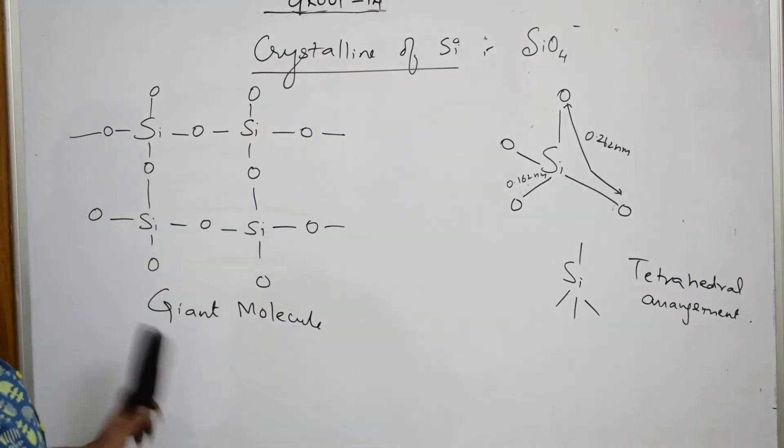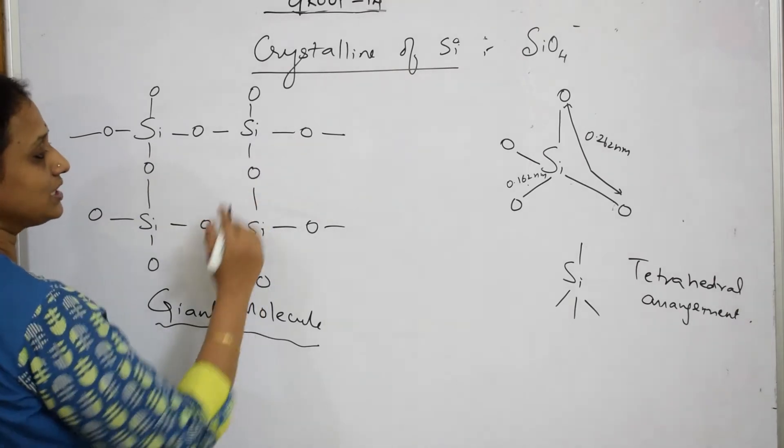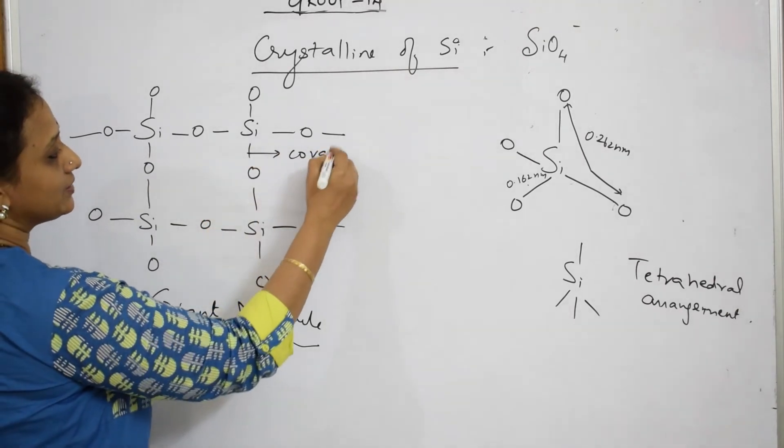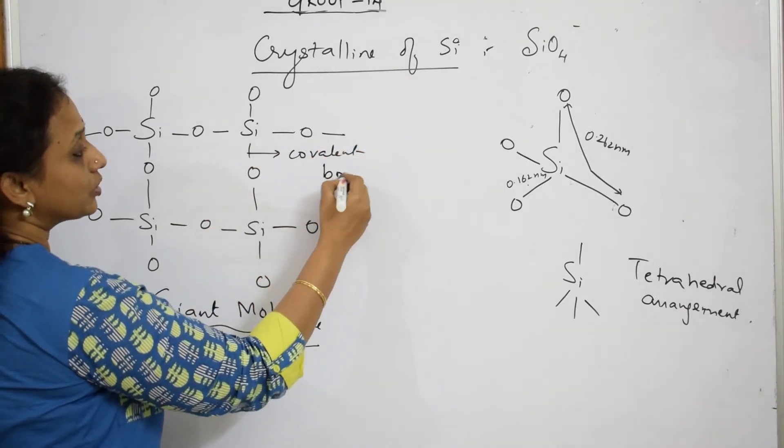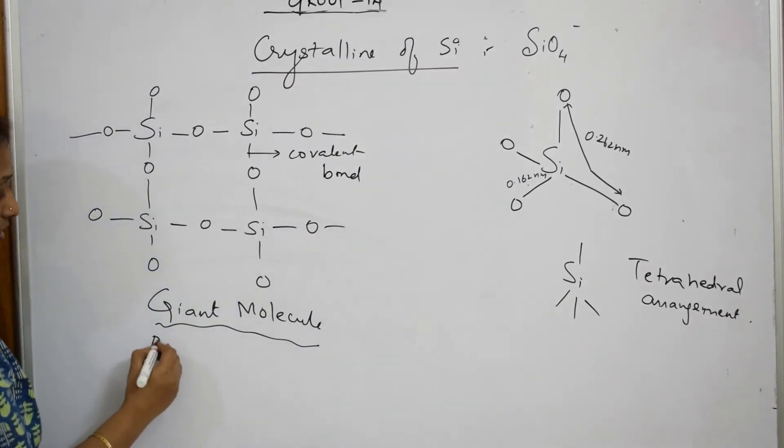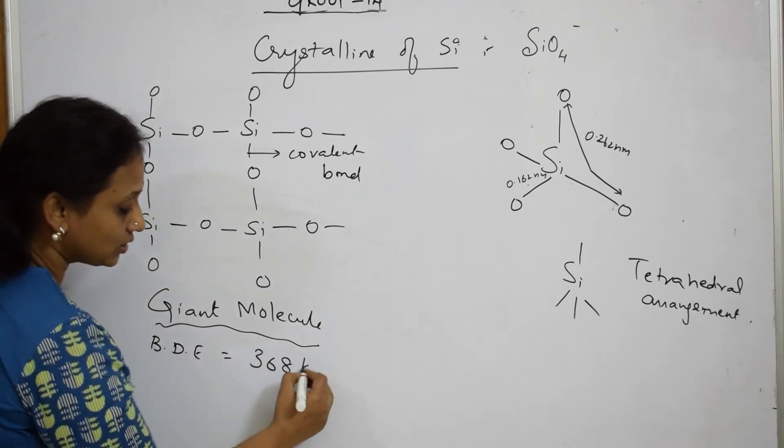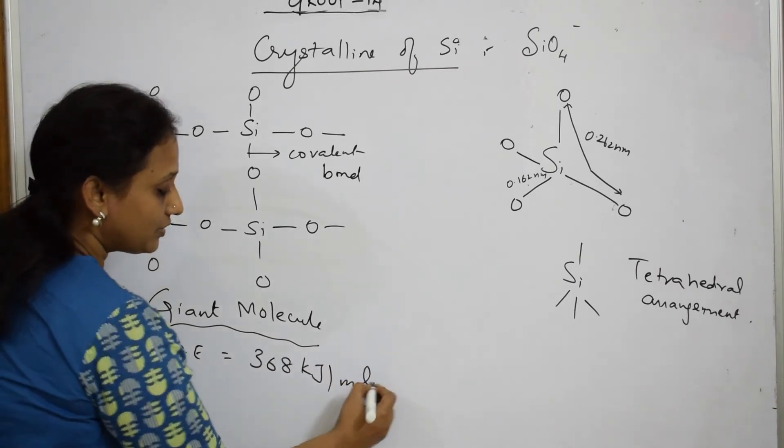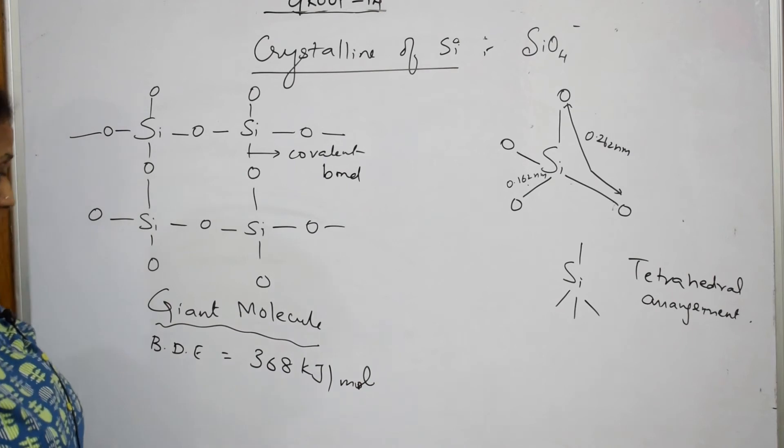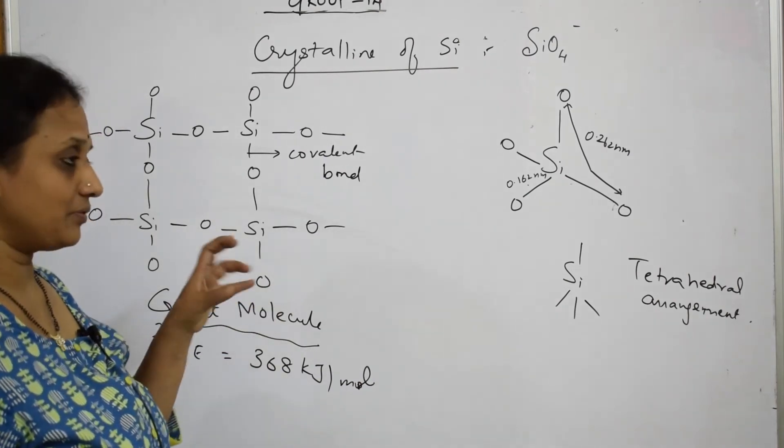Now this giant molecule, when I observe, all these bonds are covalent bonding, sharing of bonds, covalent bonding. To break this covalent bonding, I require bond dissociation enthalpy which is equal to 368 kilojoules per mole, very very high.